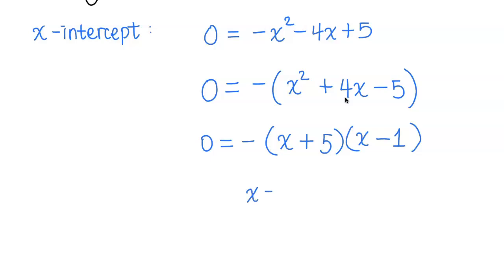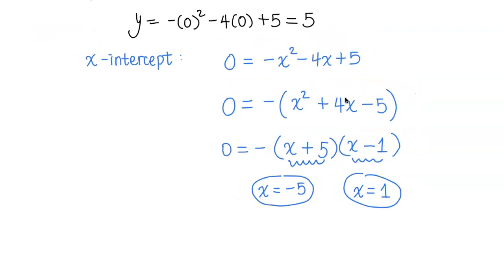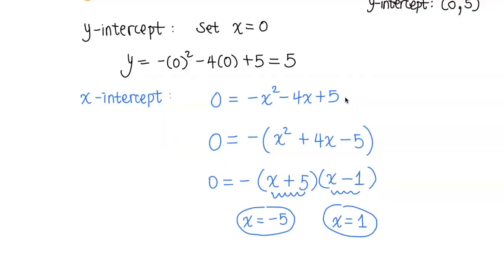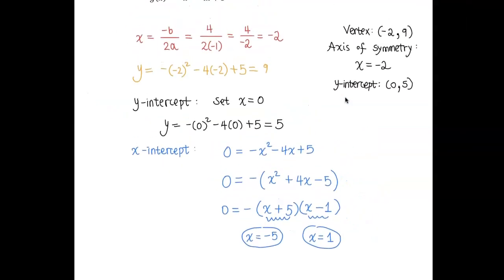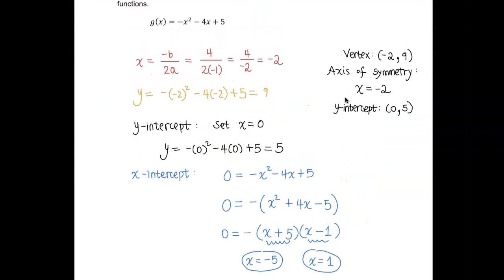So let's get those x-intercepts. This graph will have an x-intercept at x equals negative 5, and the second x-intercept at x equals positive 1. So unlike the first example, f of x that we went over, g of x actually has two x-intercepts. Let's think about this though.